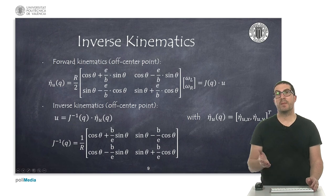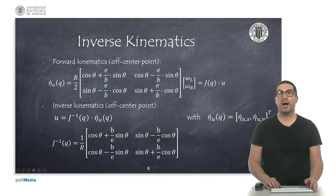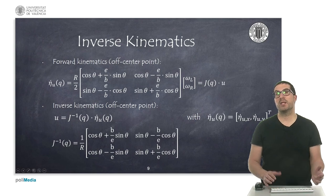As you can see, this matrix is quite simple — it depends on the orientation of the robot and also on the distance e of the off-center point, which is a design parameter.